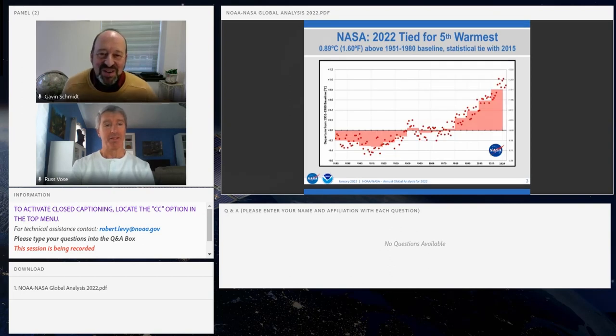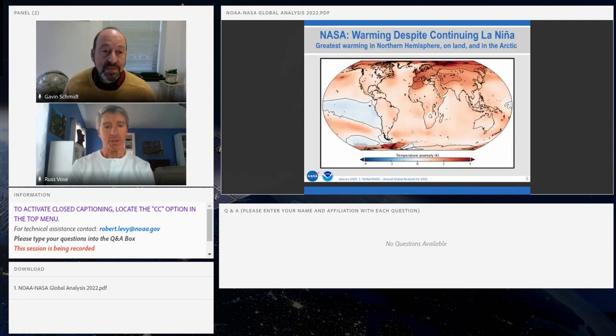Thank you very much, Russ. So the NASA record is put together slightly differently from the NOAA record in terms of methodology, interpolation, and adjustments for urban heat biases and the like. But you see that overall, the trends are very similar. The specific ranking for the NASA data was fifth joint with 2015. And again, the last nine years have been the warmest nine years in the record. The last eight years have been clearly above one degree Celsius above the late 19th century.